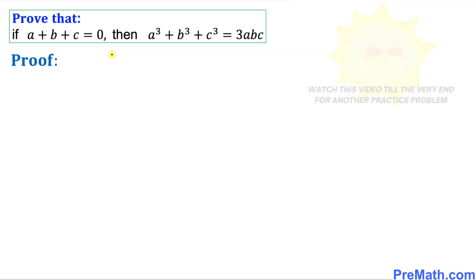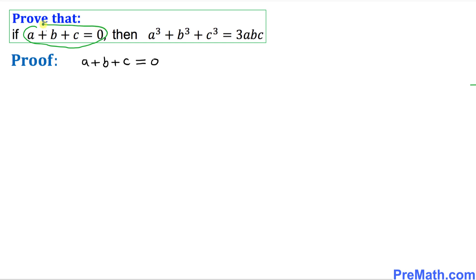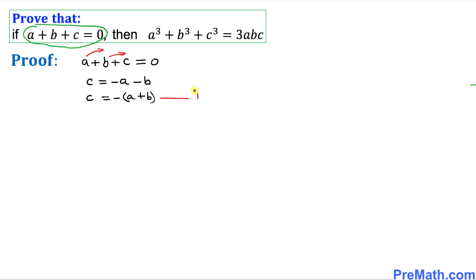Let's get started with the proof. In the very first step, I have put down a plus b plus c equal to 0 from our question. We want to isolate c, meaning a and b must go to the other side. When you move a over, it becomes negative a, and likewise b becomes negative b. Factoring out the negative sign gives us c equals negative of a plus b. I'm going to call this equation number 1.